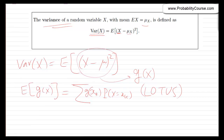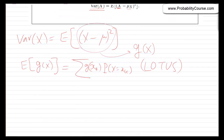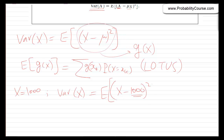For x, which equals 1,000 with probability 1, the variance is the expected value of (x − 1,000)². Since x is always 1,000, this is always 0, so the variance of x is 0.